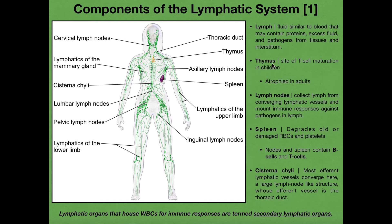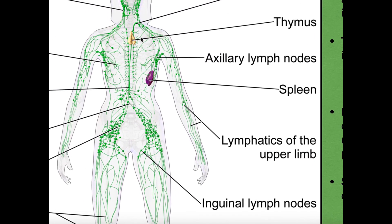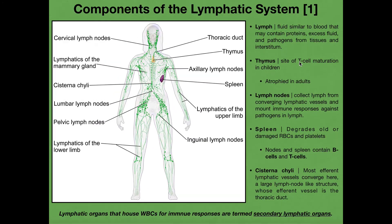I'll also mention the thymus, which we can see right up here. The thymus is the site of T cell maturation. In children and infants, the thymus is important for producing T cells. White blood cells are produced in the bone marrow, but T cells are matured in the thymus. As a child, your thymus is very important for pumping out lots of different T cell populations, which will then migrate to the various secondary lymphatic organs like lymph nodes and the spleen. Once you reach adulthood, the thymus atrophies and no longer plays a role in T cell maturation — that maturation is done in other secondary lymphatic organs. But the thymus is very important for T cell maturation in children and infants.